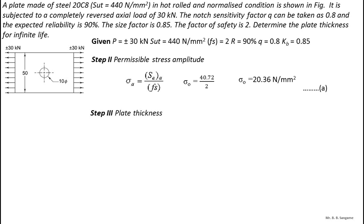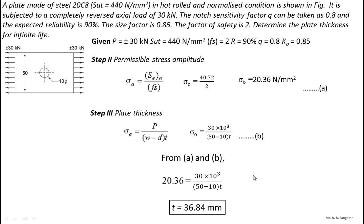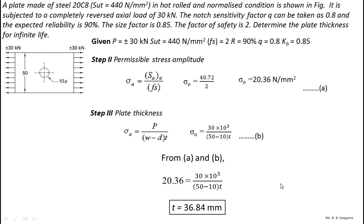Now I calculate the plate thickness t. For the plate with a hole, the stress formula is: σa = P / [(w − d) × t]. Substituting P = 30,000 N, w = 50 mm, d = 10 mm: σa = 30,000 / [(50 − 10) × t]. Equating this with Equation A (σa = 20.36 N/mm²) and solving, the plate thickness t = 36.84 mm.